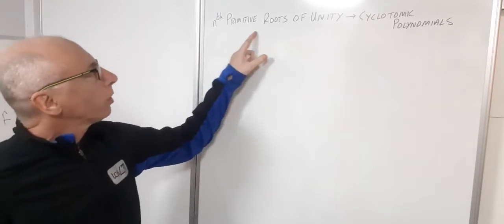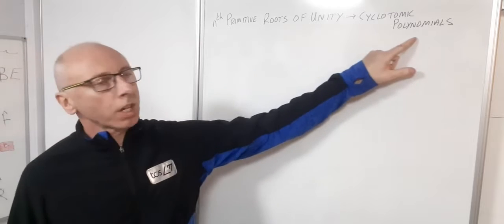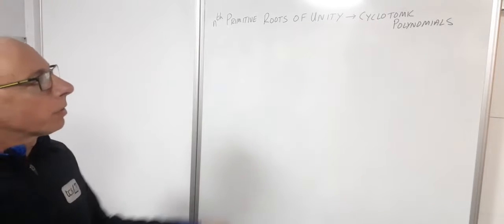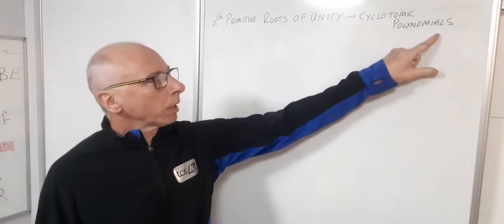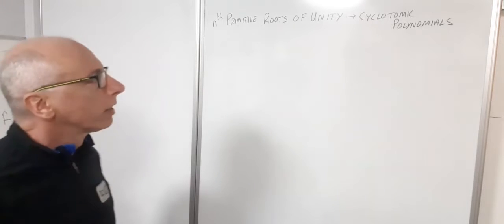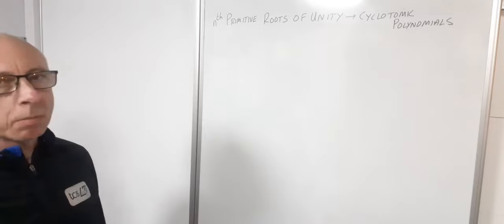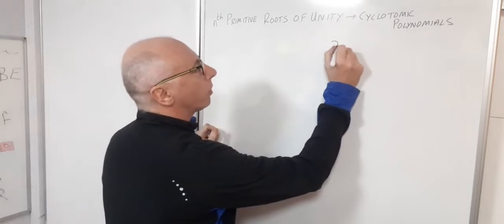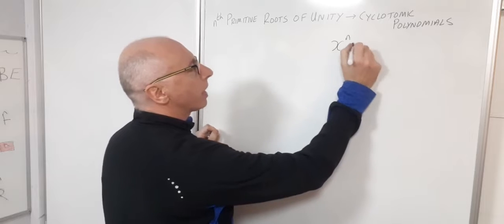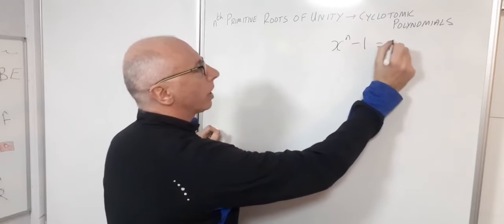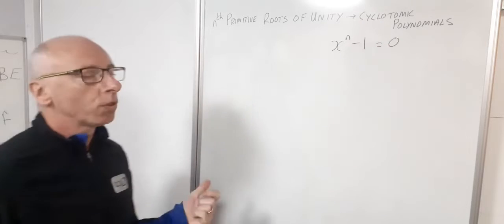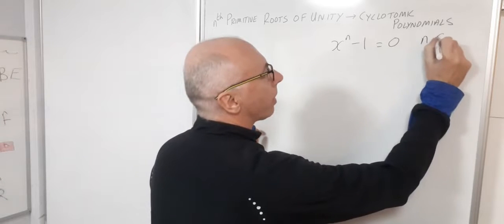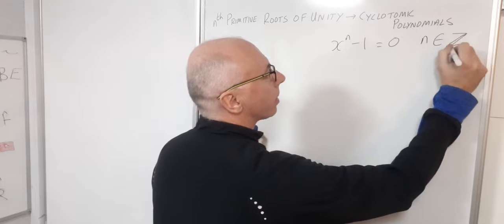In this video we're going to look into the nth primitive roots of unity and cyclotomic polynomials. Cyclotomic polynomials are found by looking for solutions to x^n minus one equals zero, where n is an integer.